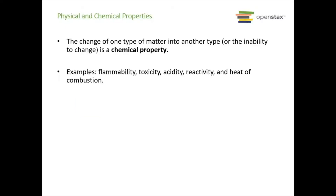How one type of matter changes into another type — or doesn't change — is its chemical property. This would be something like flammability, toxicity, acidity, reactivity, or heat of combustion. All of these have to do with one chemical changing into another.